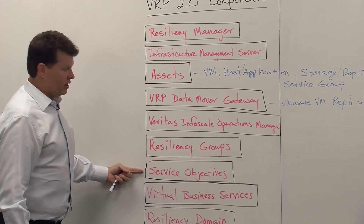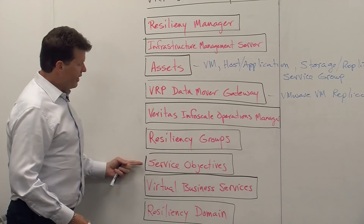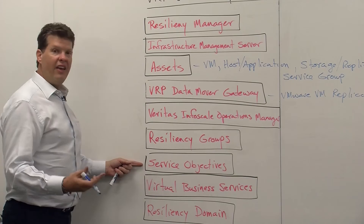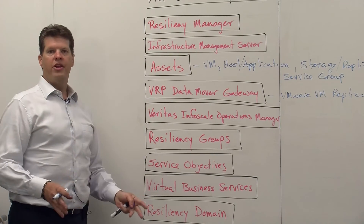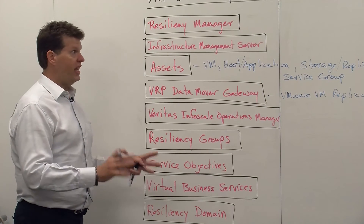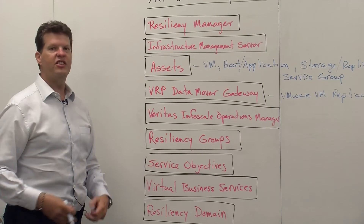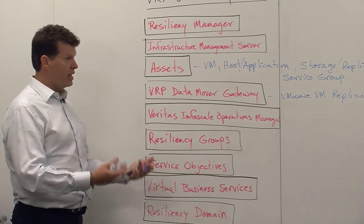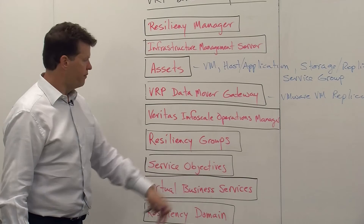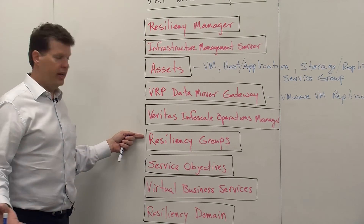Service objectives is a new thing with VRP 2.0 that allows us to define behavior for a resiliency group. The behaviors are: local monitoring, local workload management — which means we can start and stop at a local data center — or recovery service objectives, which gives us the ability to perform local workload management, starts and stops, but also migrations, takeovers, and rehearsals. We assign these to a resiliency group when we're creating it.